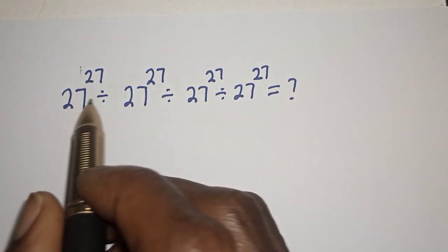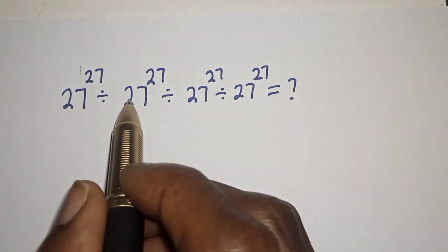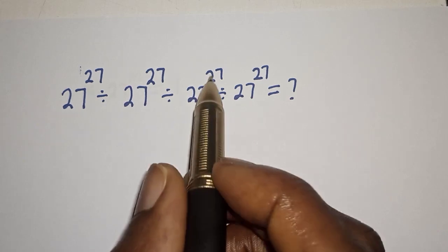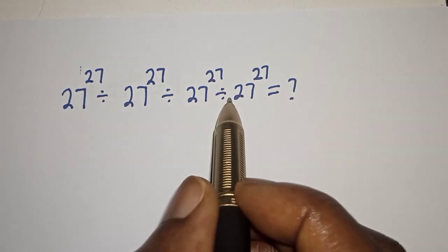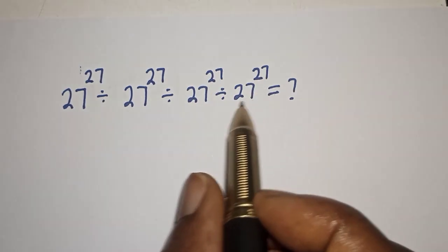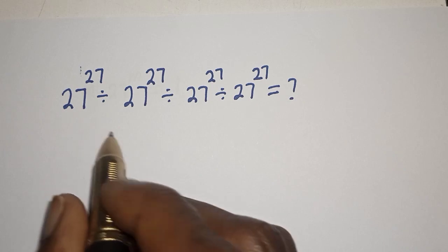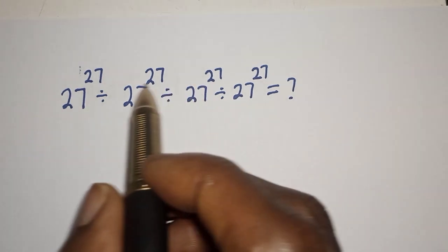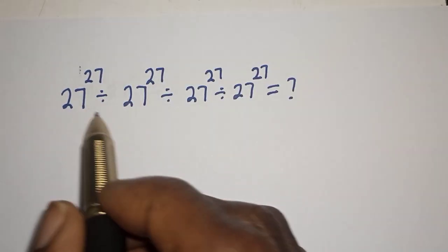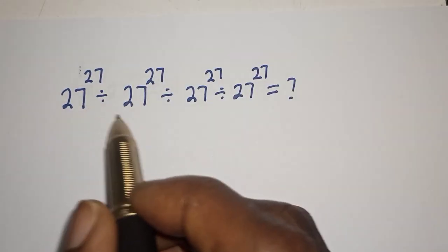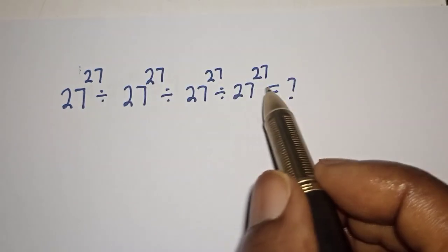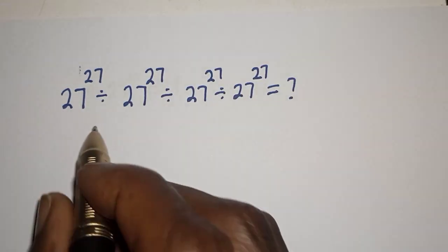27 raised to power 27 divided by 27 raised to power 27 divided by 27 raised to power 27 divided by 27 raised to power 27 is equal to what. Hi everyone, welcome to my class. In this class we quickly want to simplify this nice exponent problem. But before we proceed, please don't forget to like, share, comment and subscribe.